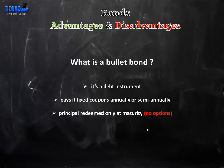A bullet bond is a simple debt instrument that pays its fixed coupons annually or semi-annually, whilst the principal can only be redeemed at maturity. Therefore, the bullet bond comes with no options.